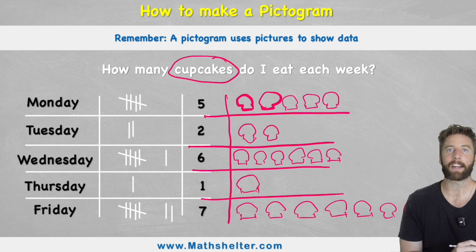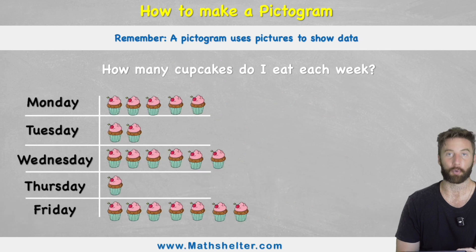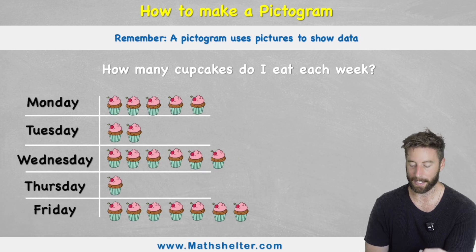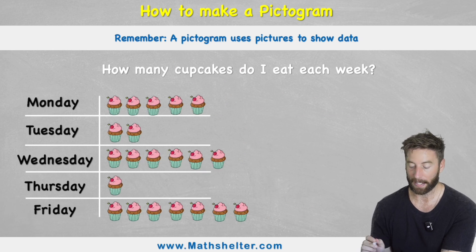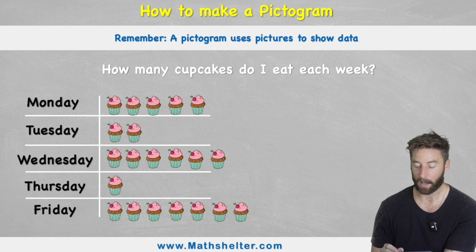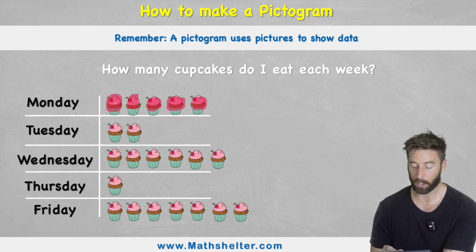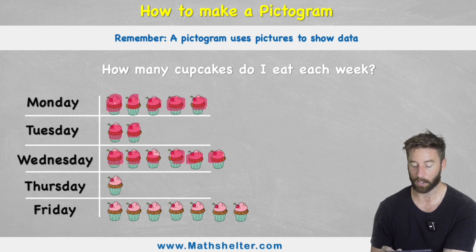So let's tidy this graph up a little bit and use actual pictures. This is what our pictogram would look like. On Monday: one, two, three, four, five. On Tuesday: one, two. Wednesday: three, four, five, six. Thursday: just the one. And Friday: the seven.